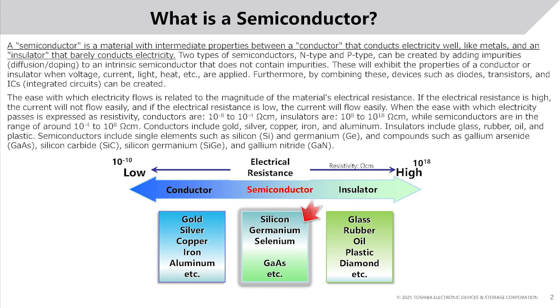Conductors include gold, silver, copper, iron, and aluminum. Insulators include glass, rubber, oil, and plastic.